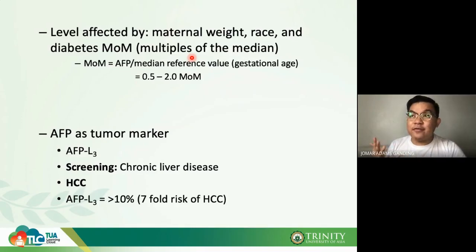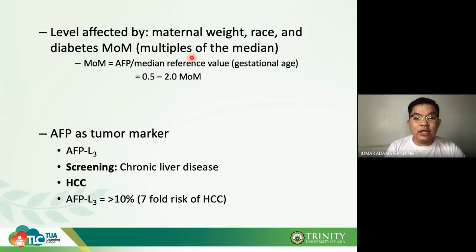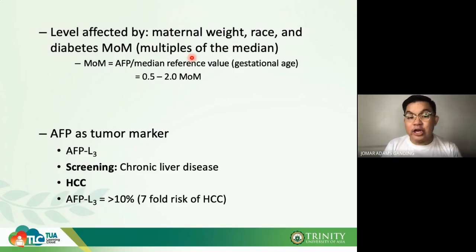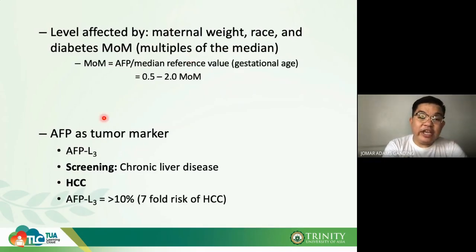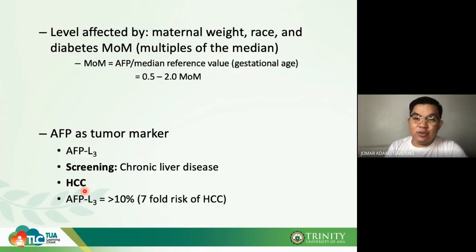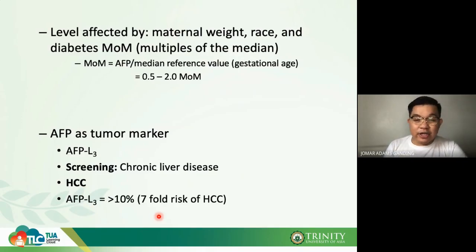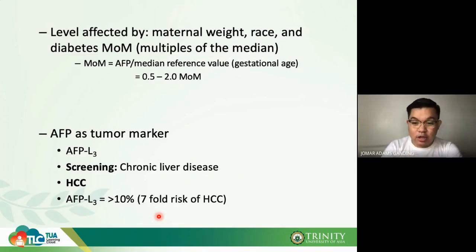In adults, alpha-1 fetoprotein is a tumor marker — it increases in chronic liver disease, specifically the AFP-L3 form. It is a screening test for chronic liver disease and hepatocellular carcinoma (HCC). Increased levels of AFP are observed in hepatocellular carcinoma.